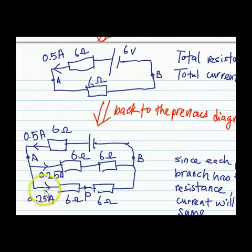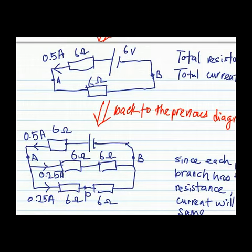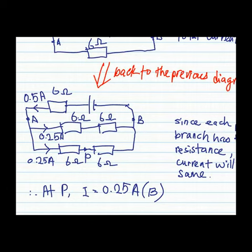Each branch has the same value of resistance. Now look at the current flowing through the branch where point P is located. The current flowing through this branch is 0.25 ampere.